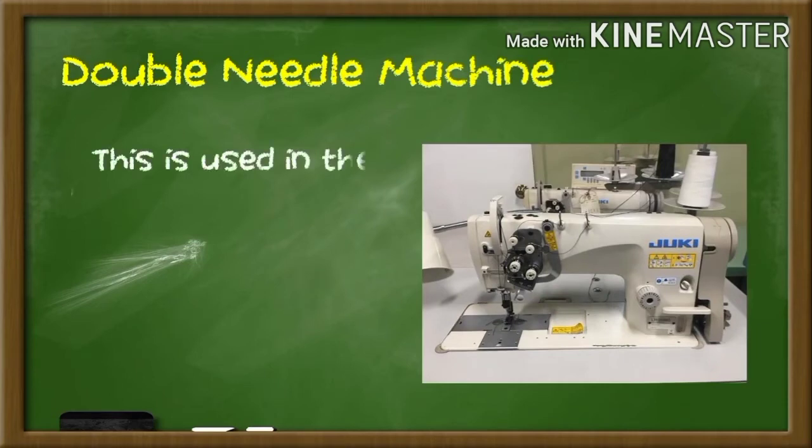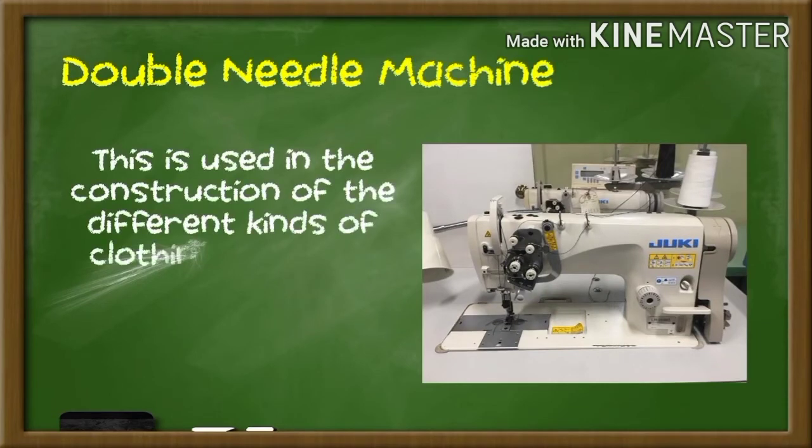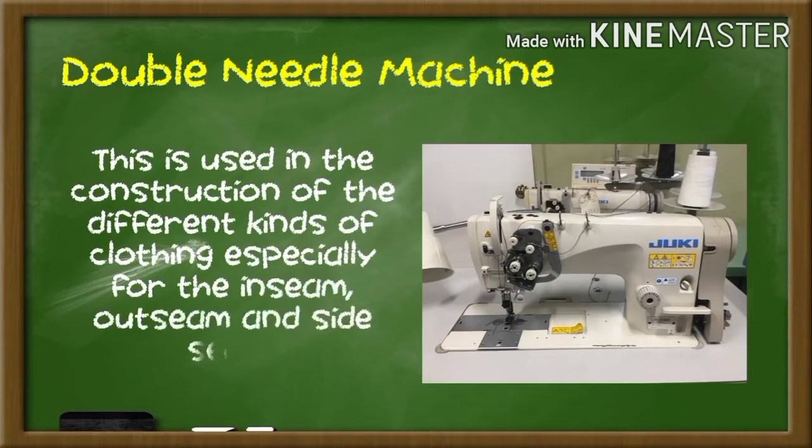Double needle machine. This is used in the construction of different kinds of fabric, especially for the inseam, outseam, and side seam.